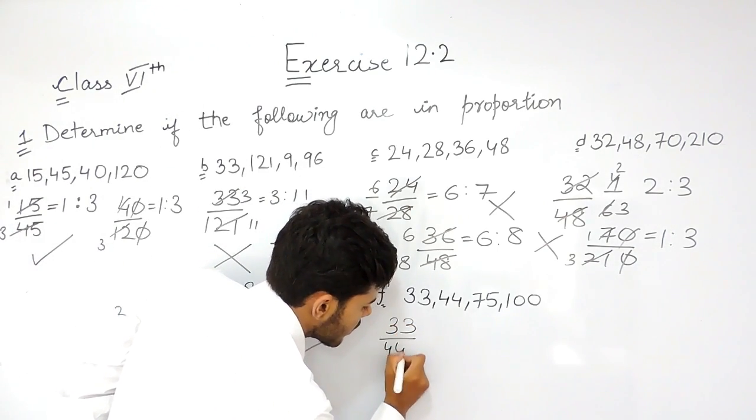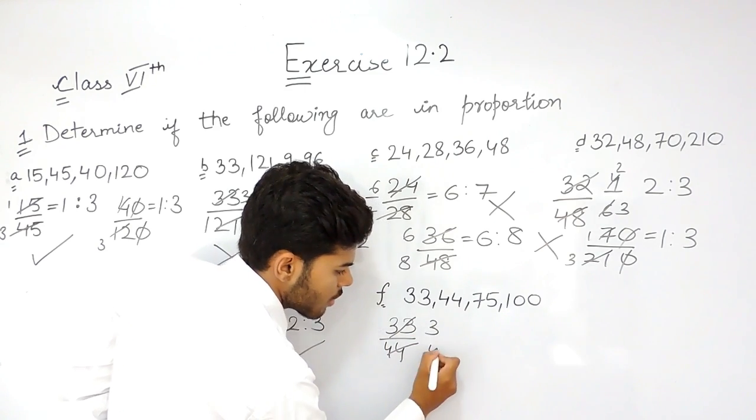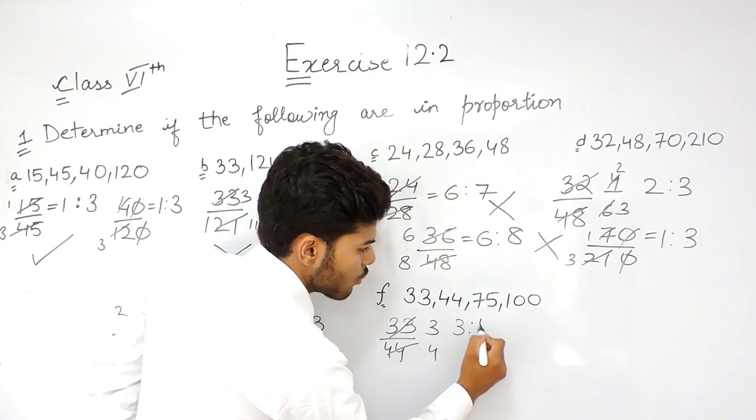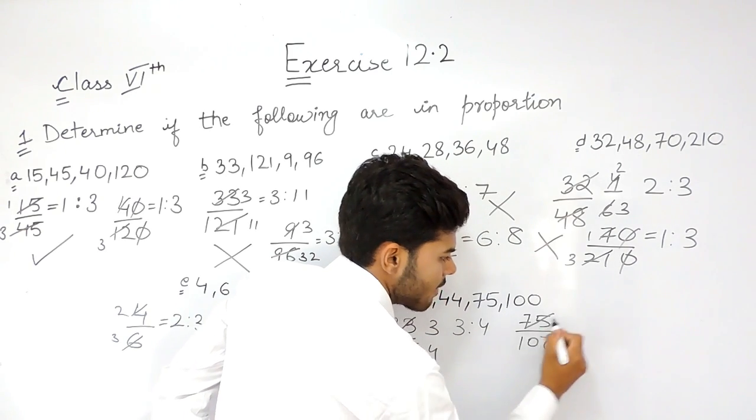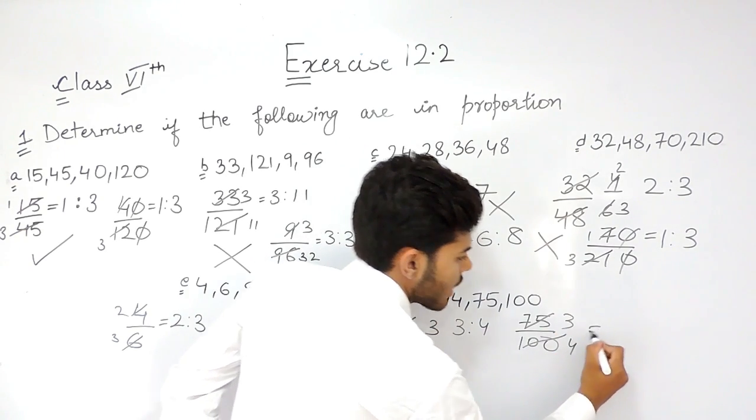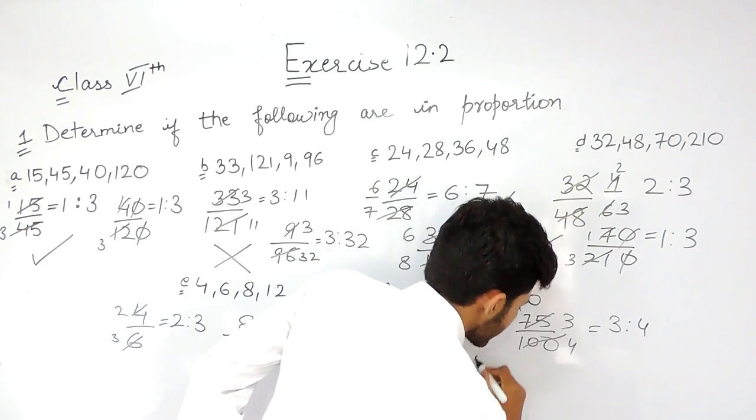33 upon 44. That's 11, 3 times 11, 4 times 11, this is 3 ratio 4. And 75 upon 100, that's 25, 3 times 25, 4 times 25, again 3 ratio 4. So this is also in proportion.